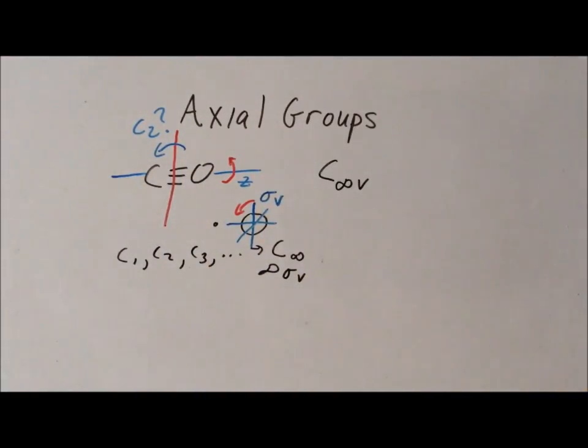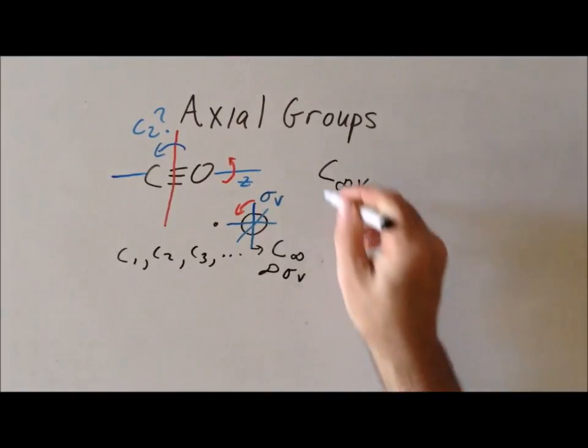Therefore, there is no C2 that is perpendicular, normal to Z. So therefore, this is not a D group of any type. So we are left with the point group assignment of C infinity V for carbon monoxide.